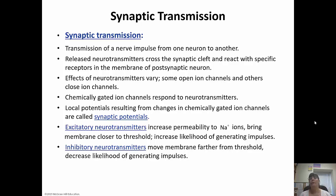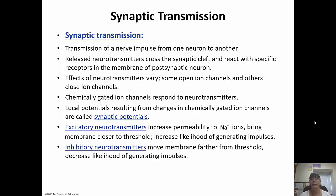Depending on the neurotransmitter, the effect can be inhibitory by closing ion channels or excitatory by opening ion channels. The gated ion channels respond to the neurotransmitter. Local potentials resulting from changes in chemically gated ion channels are called synaptic potentials. Excitatory neurotransmitters increase permeability to sodium ions, bringing the membrane closer to threshold and increasing the likelihood of generating an impulse. Inhibitory neurotransmitters move the membrane farther from threshold and decrease the likelihood of generating impulses.